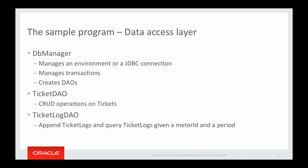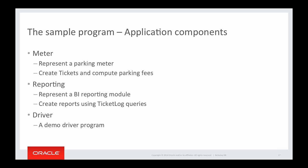The data access layer of the sample program consists of three interfaces. DBManager manages the environment or a JDBC connection, manages transactions, and creates DAO objects. We have two types of DAO objects: TicketDAO providing CRUD operations on tickets, and TicketLogDAO providing methods for appending ticket logs and querying ticket logs given a parking meter ID and a time period. We have provided three implementations, one for each API discussed.